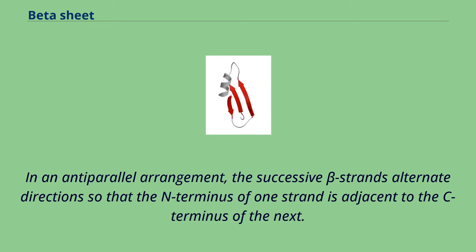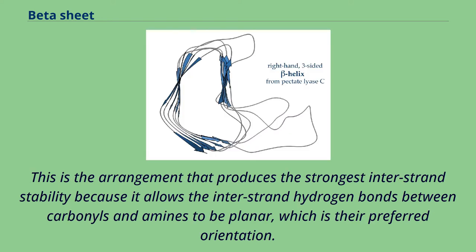In an anti-parallel arrangement, the successive beta strands alternate directions so that the N-terminus of one strand is adjacent to the C-terminus of the next. This is the arrangement that produces the strongest inter-strand stability because it allows the inter-strand hydrogen bonds between carbonyls and amines to be planar, which is their preferred orientation.